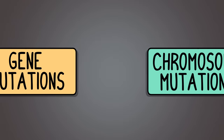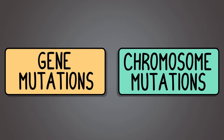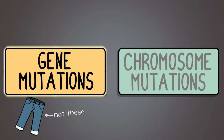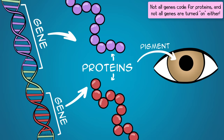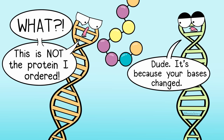So let's discuss some different types of mutations. We'll start with gene mutations. DNA makes up genes, and genes can code for proteins that influence different traits. So when a mutation in DNA happens — specifically a change in one or more DNA bases — different proteins can be produced, which can affect an organism's traits.